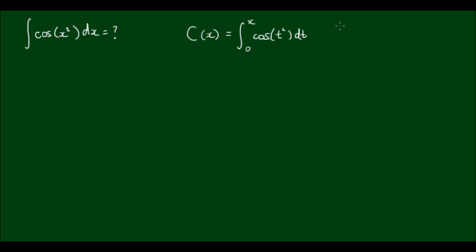And the Fresnel function for sin is equal to the integral from 0 to x of sin(t²) with respect to t. But how do we go about integrating this? You might think that this expression is actually simple enough and we can use a substitution.